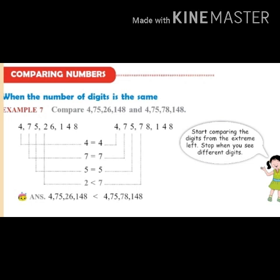The first digit on the left is four in both numbers — same, so compare the next digit. Both have seven — same, compare the next. Both have five — same. The next digit: one number has two, the other has seven. Two is smaller than seven, so the first large number is smaller than the second large number. Now we finish Exercise 1.1 — try yourself and complete it. Thank you, children.